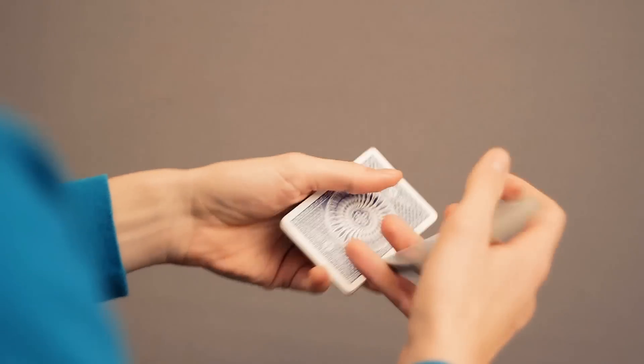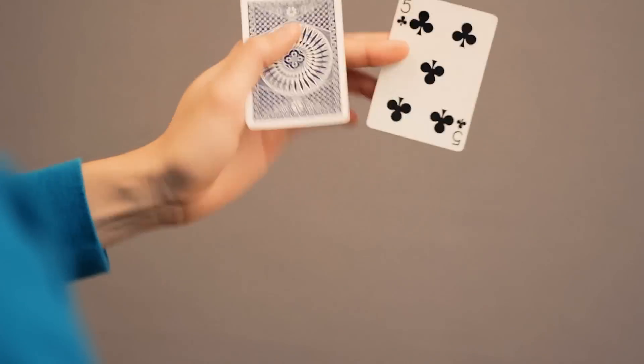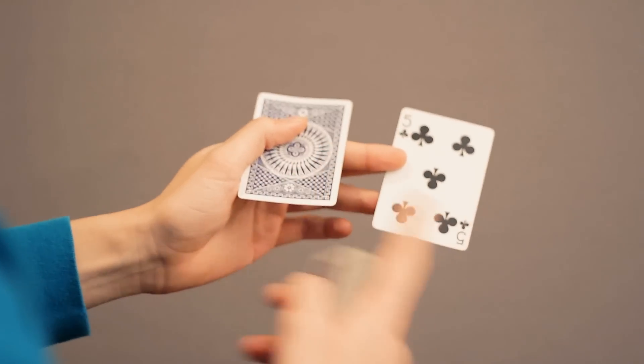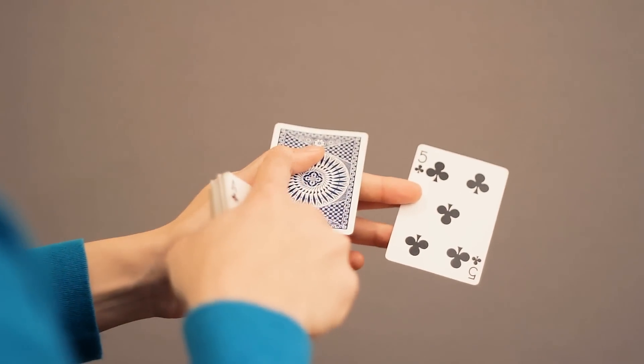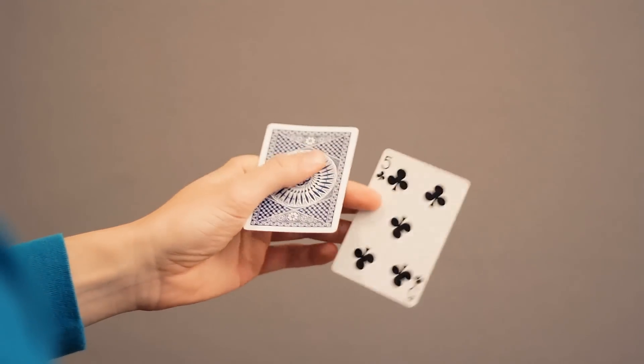When you combine these two, it's gonna look like that, and then you're left in this weird grip where you have two singles. And now you're just gonna move your thumb all the way up here and the card is gonna go around the other card.